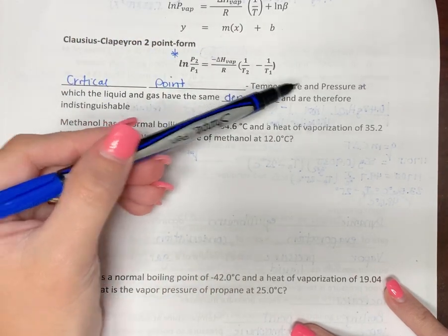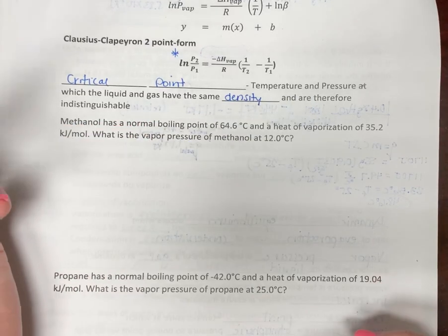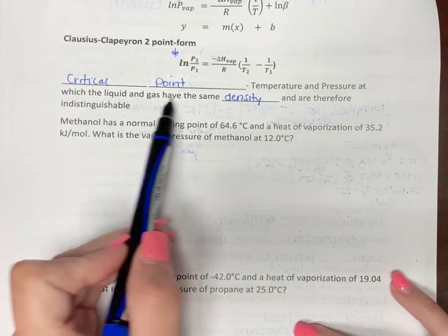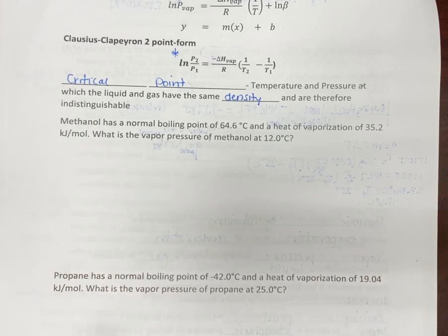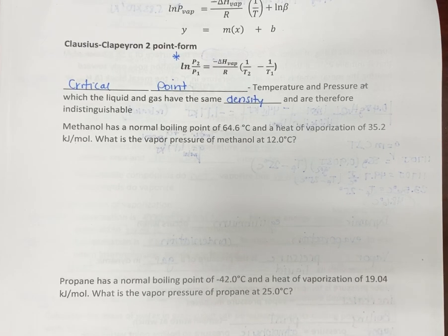Well, if you raise the temperature and the pressure both so much, you actually can't tell when they have the same density what is a liquid and which is the gas. So that's what a critical point is. But let's try to utilize some of this equation here.